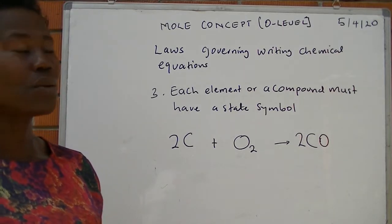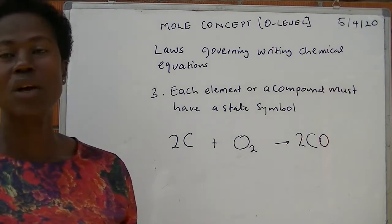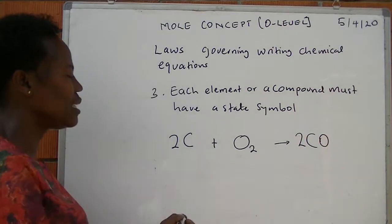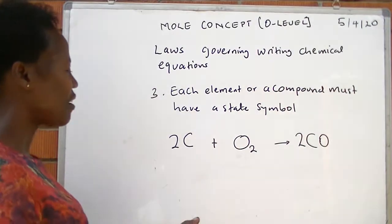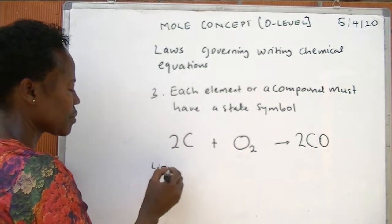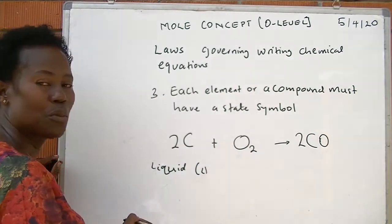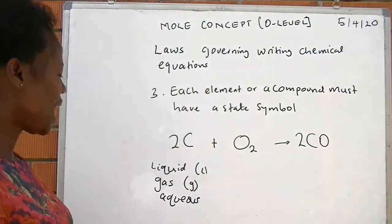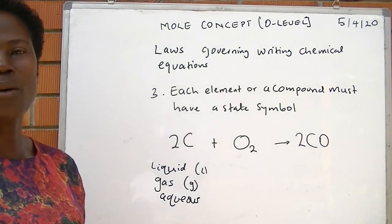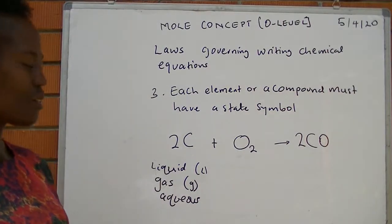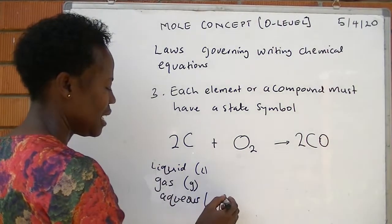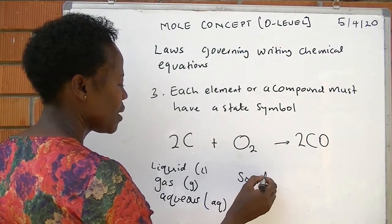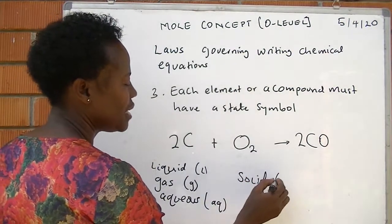Rule three: after balancing the chemical equation, each element or compound must have a state symbol. We have three states: liquid, represented by a small letter l; gas, represented by a small letter g; aqueous, where a compound is dissolved in water and becomes a solution, represented by aq; and lastly solid, represented by a small letter s.